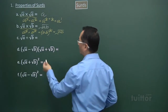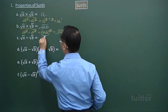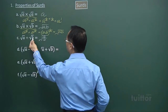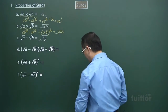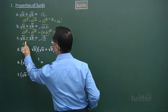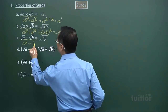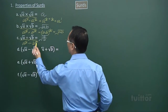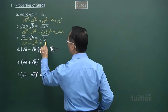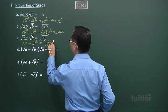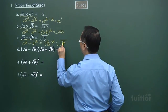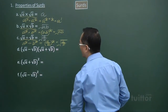For part c, we have the square root of a divided by b — that is square root a divided by square root b. Thinking in terms of the rules of indices, we have a to the power of half divided by b to the power of half. Because the indices are the same, we get a divided by b raised to the power of half, which becomes square root of a over b.